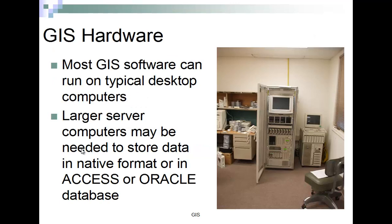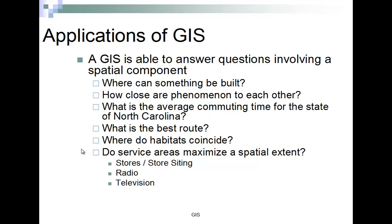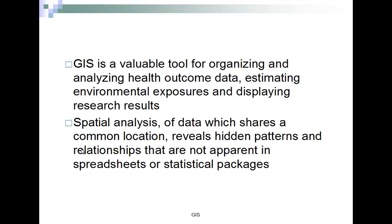This is the type of hardware we have — a big server computer — and this is the software we're going to be working with. We can look at different applications: where something can be built, average commuting time, the best route between two places, and where habitats coincide. Some of these intersect with the social sciences. GIS is a valuable tool for organizing health outcome data, environmental exposure, and displaying research results.